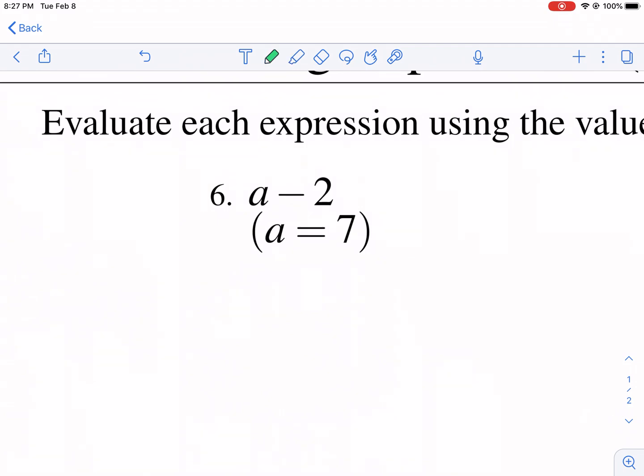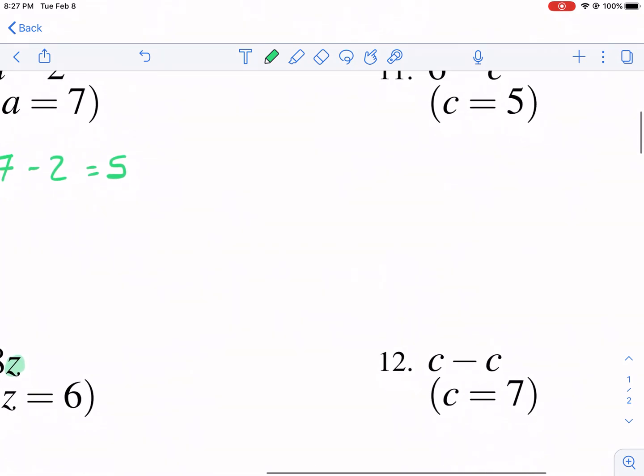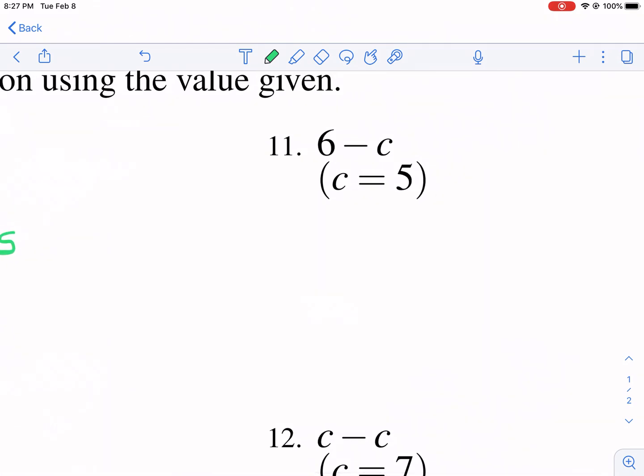Okay so one like this. A equals 7. So instead of writing a we're going to write 7. And we're going to keep the other part the same. So minus 2. And that equals 5. Again all of these you're just plugging the value. This one instead of 6 minus c we're going to write 6 minus 5. And that equals 1.